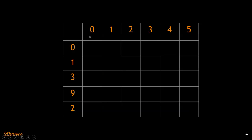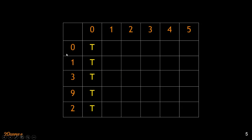If we have a target sum of 0, what kind of subset will add up to 0? An empty set can add up to 0. So even if we consider subsets like {0}, {0,1}, {0,1,3}, or {0,1,3,9,2}, all of them contain an empty set as their own subset, and that empty set adds up to 0. So all the cells in the target-sum-0 row are true.